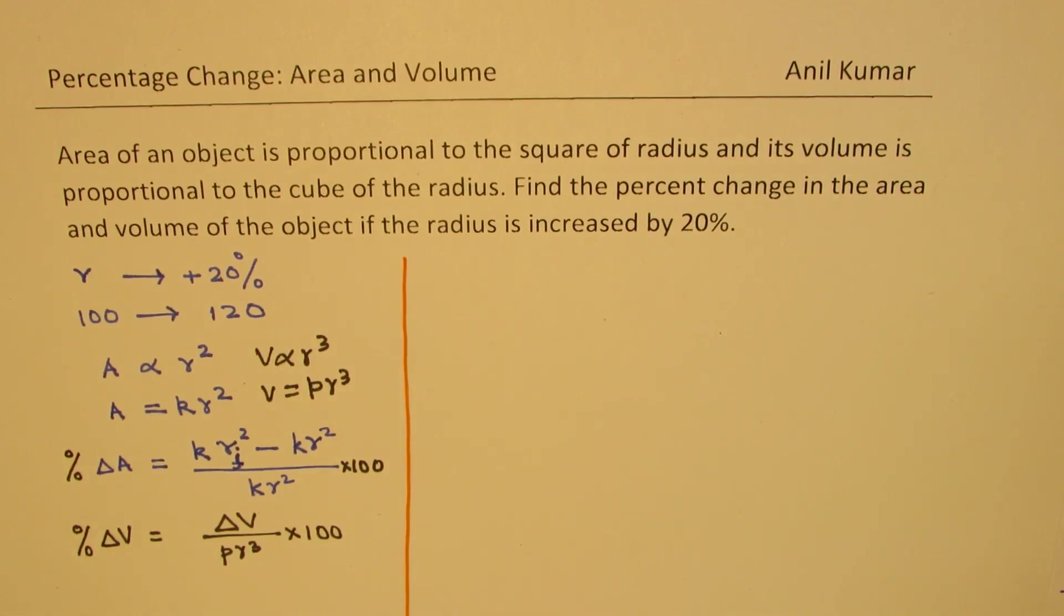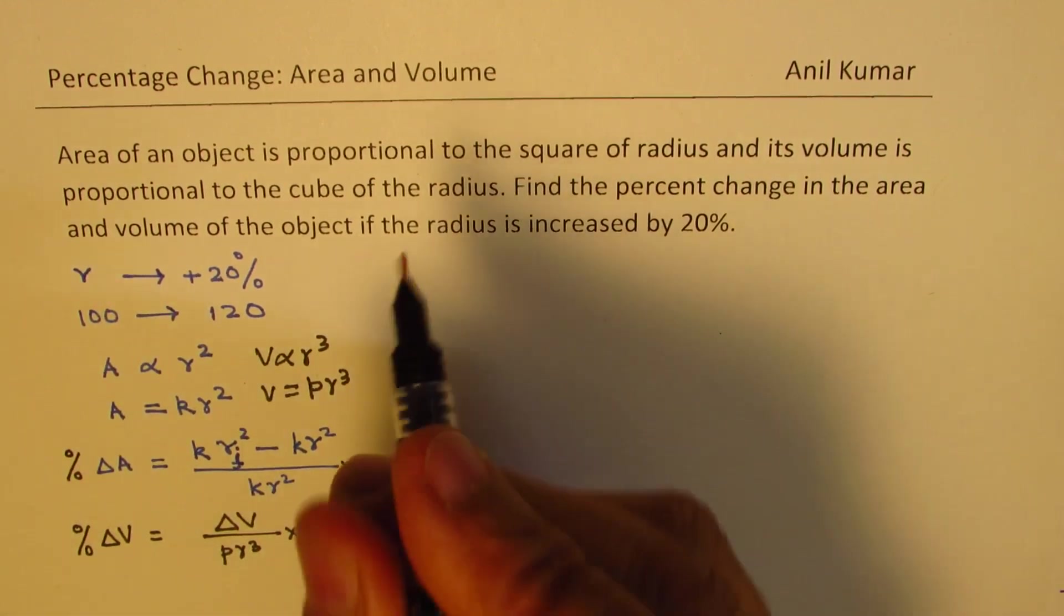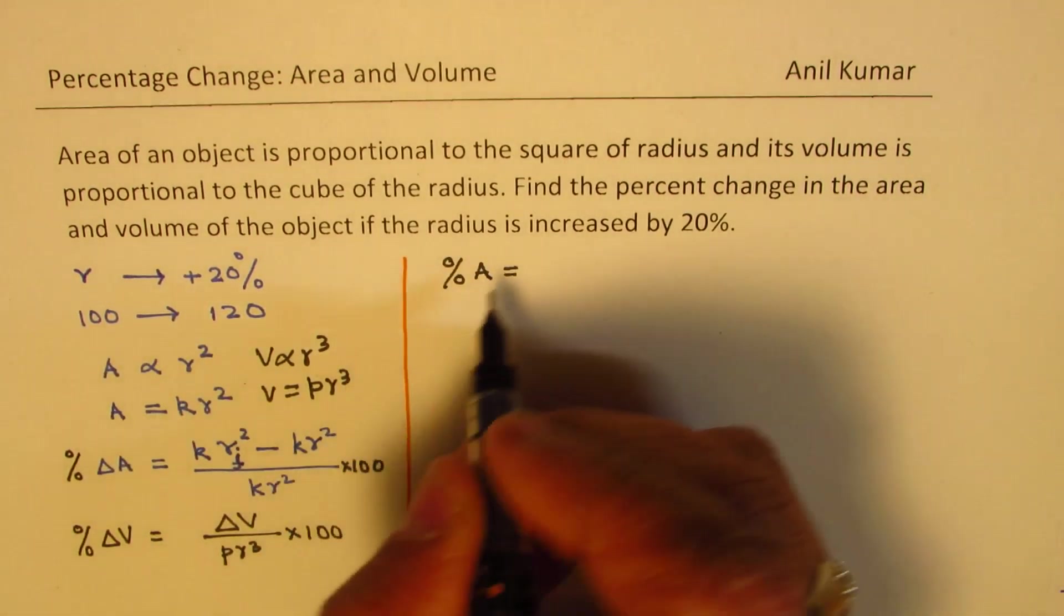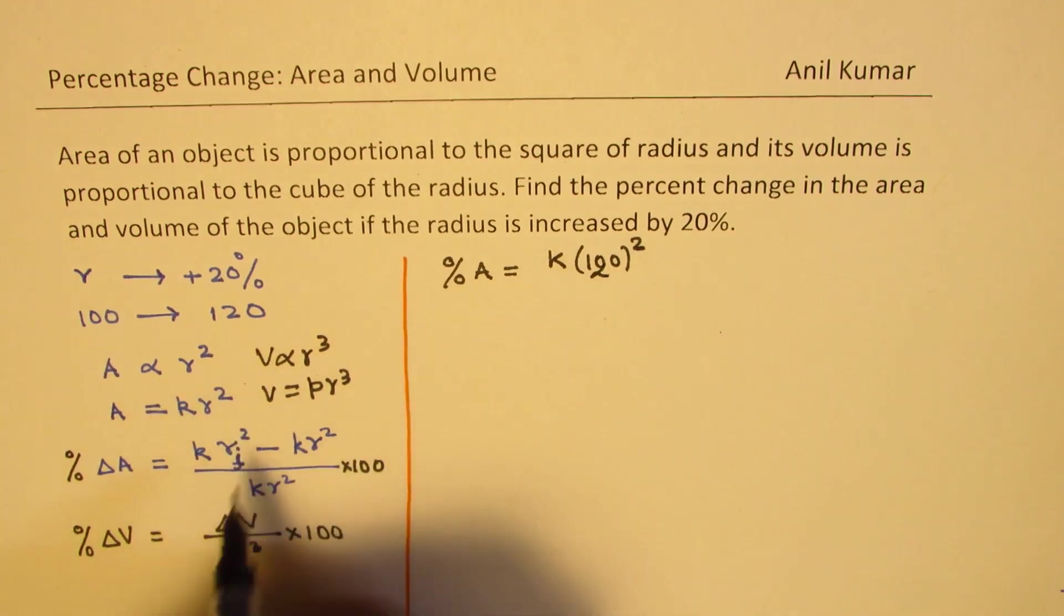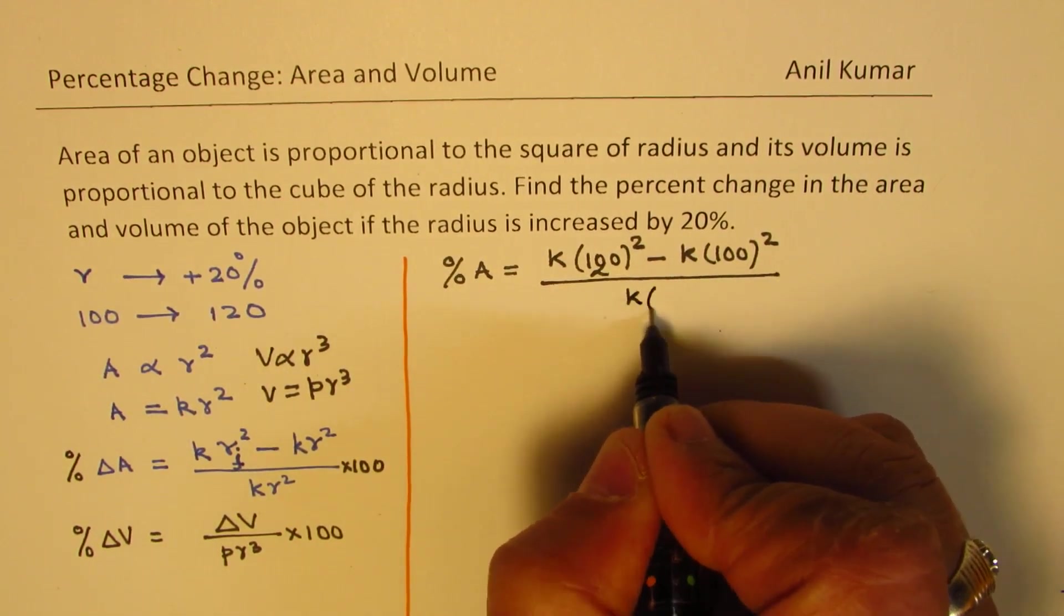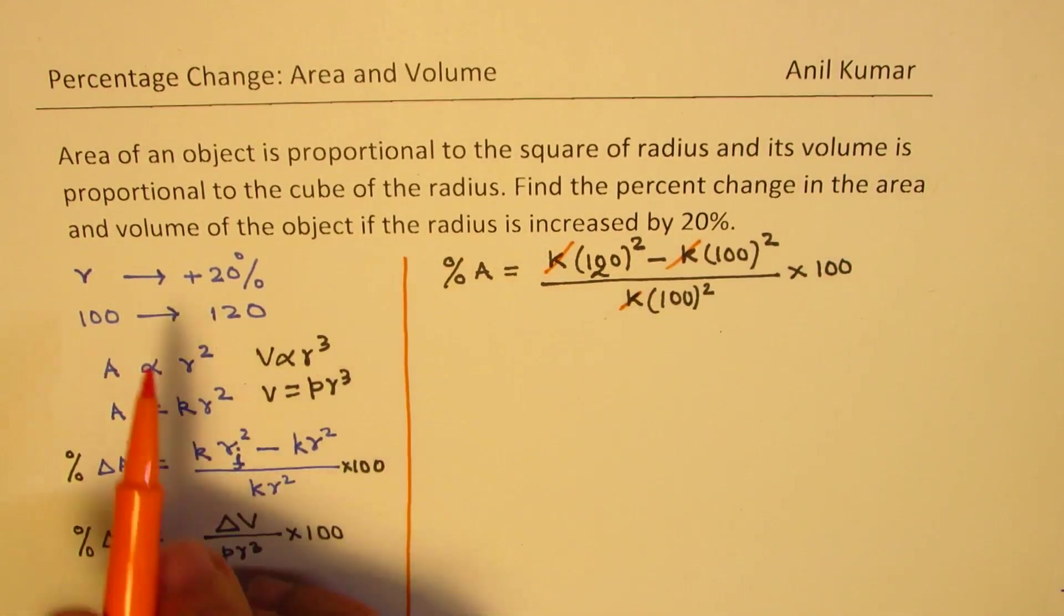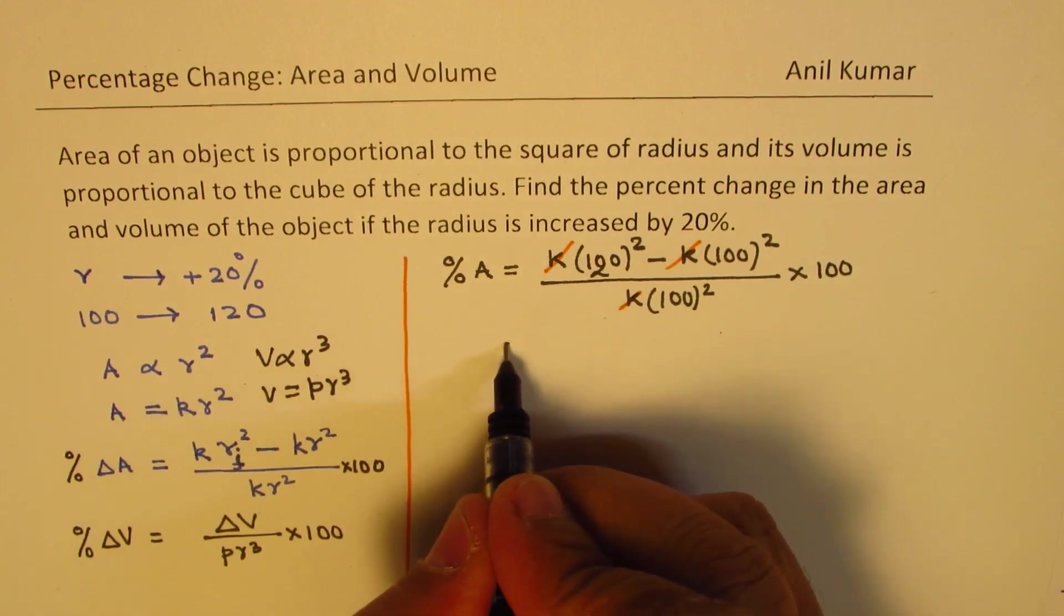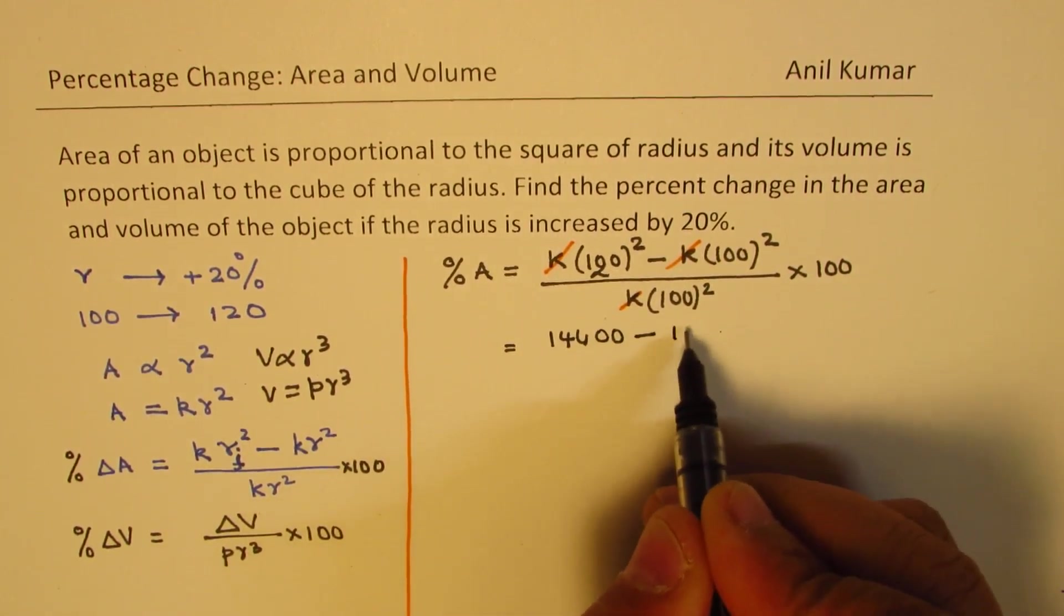Now for easy calculations, what we will do is we will use R as 100 and increased value of 120. So we are saying that initially now let's work on percentage change in area. So initially the area will be K times R is 100. The final value will write first. That is a bigger value divided by the initial value 120. So as you see in this calculation this constant actually cancels. So proportional and equal to doesn't really make any difference.